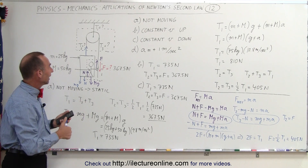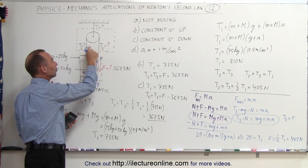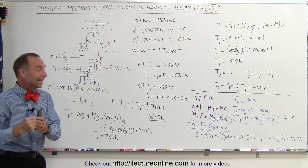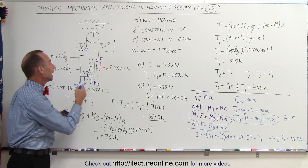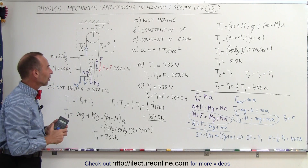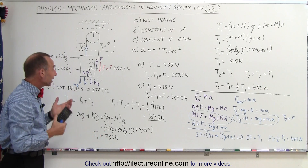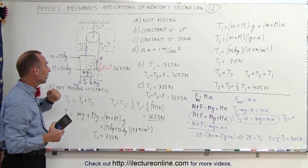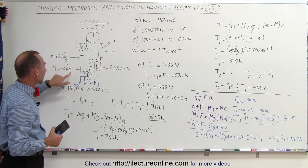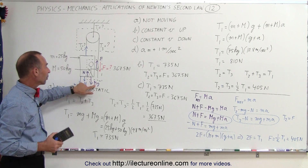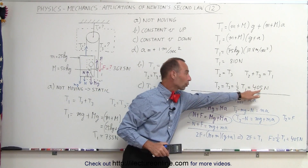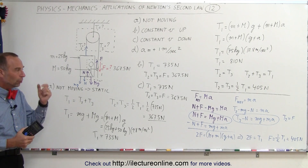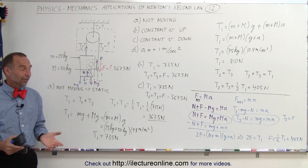So whether using the pulley free body diagram or solving two simultaneous equations, you get the same results: T1 = 810 N, T2 = T3 = 405 N, and the person must pull with 405 newtons. Is that even possible? The person's weight is 50 × 9.8 = 490 newtons, which is greater than 405 newtons — so yes, it's physically possible. And that's how we solve this problem.